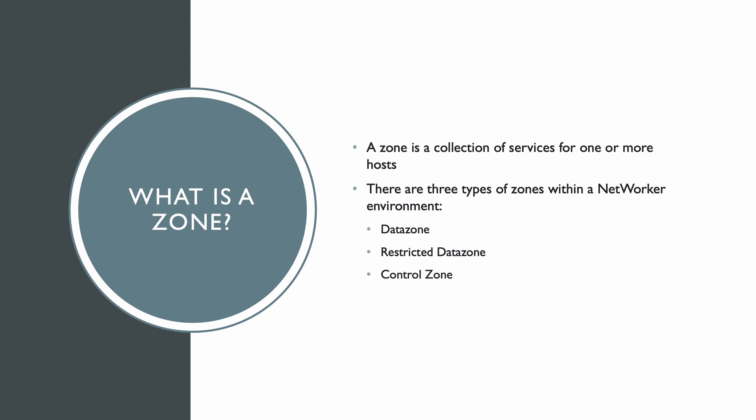A zone in NetWorker is a collection of services for one or more hosts. There are three types of zones in a NetWorker environment: a data zone, a restricted data zone, and a control zone. When you're deploying NetWorker, you don't really need to worry too much about the different zones — NetWorker will get things done for you automatically. But it's certainly important to know about these zones from an architectural perspective. So let's move on to see what each of these zones are for.